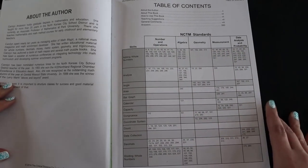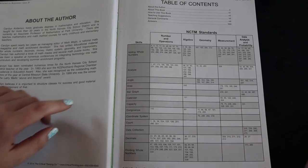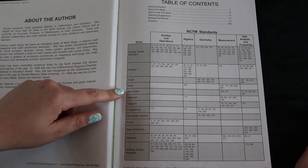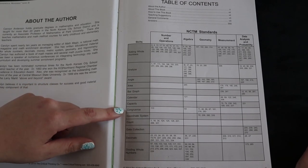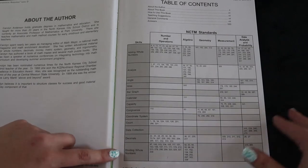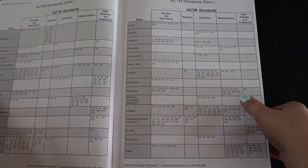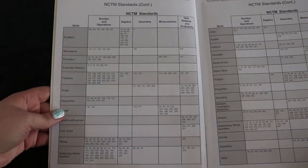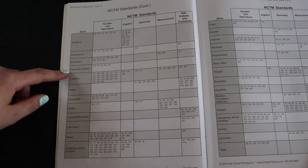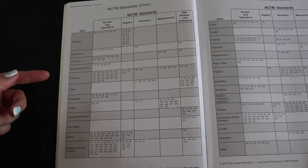And for level D they go through a whole ton of skills from adding whole numbers, analyze, angles, area, bar graph, calendar, capacity, congruence, coordinate system, count, data collection, decimals, defining whole numbers, equations, equivalence, estimation, expanded notation, fractions, graph, inequalities, length.